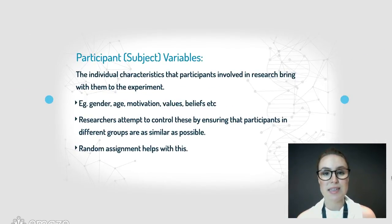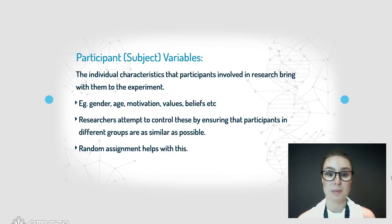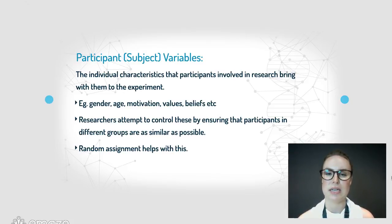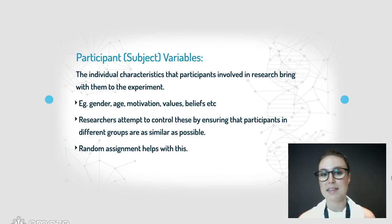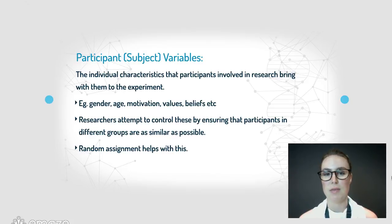Participant variables — also called subject variables — are extraneous variables to do with the people involved, specifically what they bring with them to the experiment: things like their age, their gender, their motivation, whether they're willing to be there, and what they already believe about the experiment. The researcher tries to control these by ensuring participants who are randomly allocated to the different groups are as similar as possible. Random assignment really helps to eliminate or reduce participant variables, as does having a really large sample size.